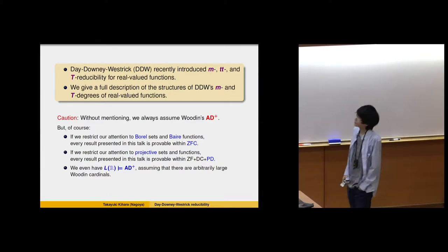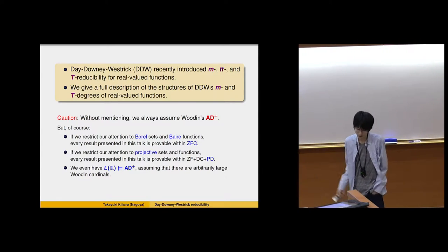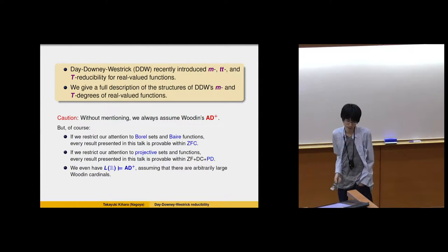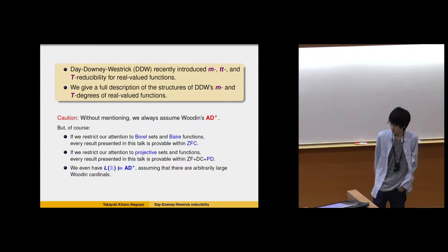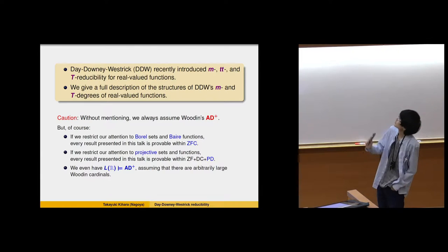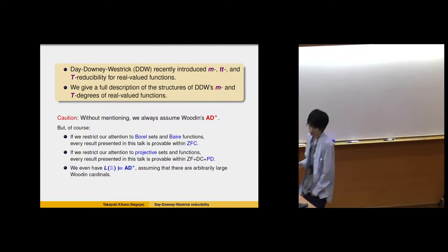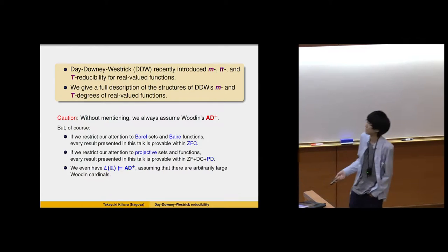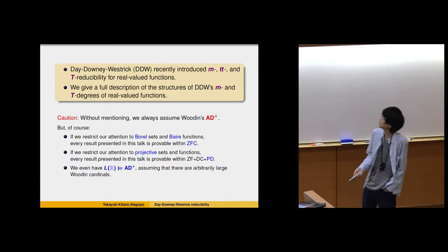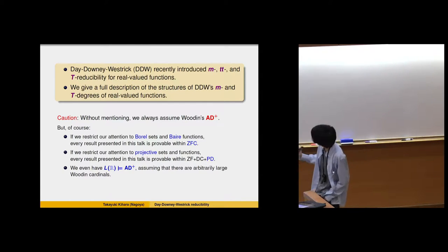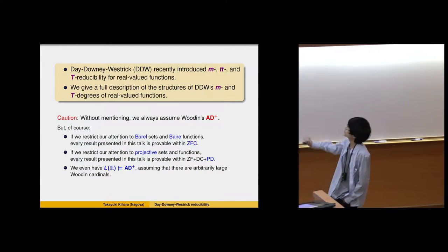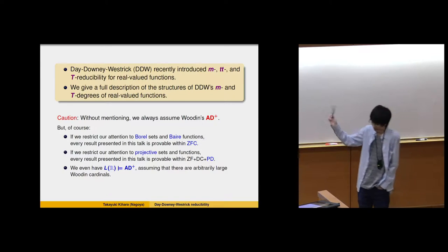As I said, recently Dainy Westerick introduced many-one and Turing reducibility for real-valued functions. The purpose of my talk is to give a full description of the structure of the many-one reducibility for real-valued functions. Be cautious that without mentioning, we always assume AD+, which consists of ZF plus dependent choice, and the statement that every subset of reals is infinity-Borel, plus ordinary determinacy.